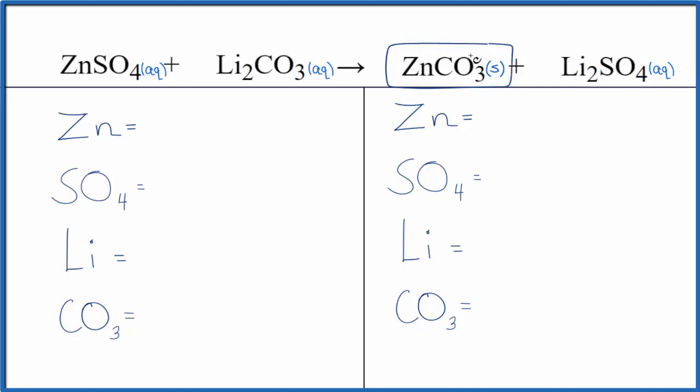But zinc carbonate, that's insoluble. So this is going to be a precipitate. So it's a double displacement reaction, and this is the precipitate. It'll fall to the bottom of the test tube.